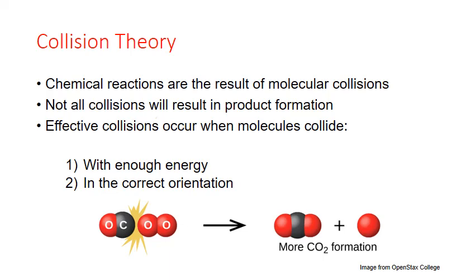Thinking of chemical reactions as the result of molecular collisions is a really useful way of understanding the factors that influence rate. This is collision theory. According to it, chemical reactions are the result of molecular collisions. But not all collisions between reactant molecules are effective at forming products. Effective collisions occur when the molecules collide with two factors complete: one is that they have enough energy to overcome the activation energy and form the activated complex, and the other is that they collide in the correct orientation to break and form new bonds.